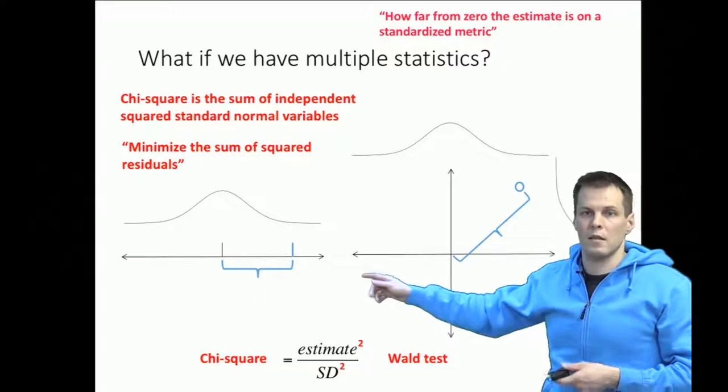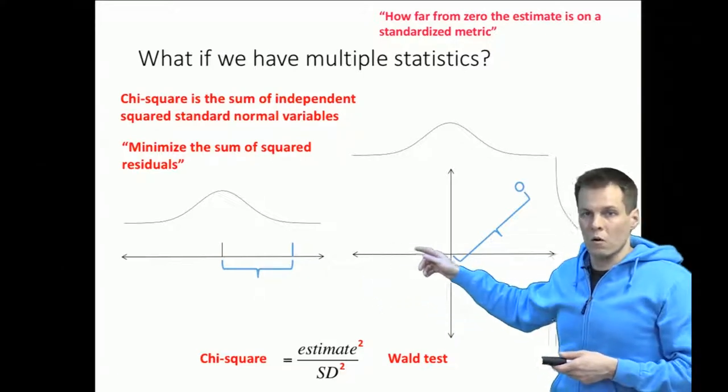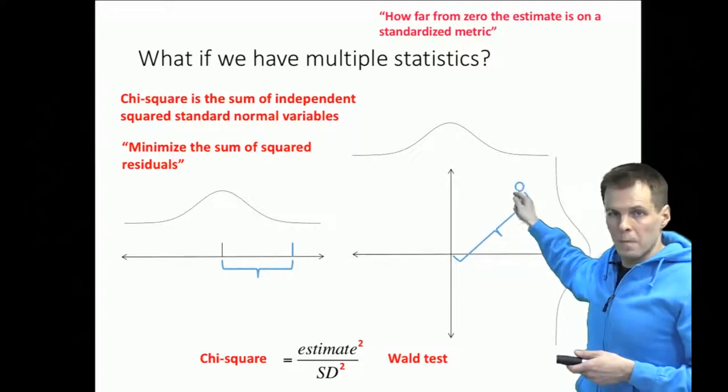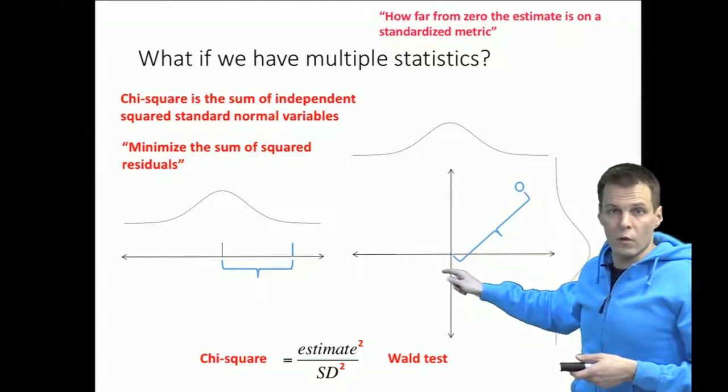So you are basically assessing how far on a standardized metric the individual combination of two or more estimates are from the zero point using a standard error.